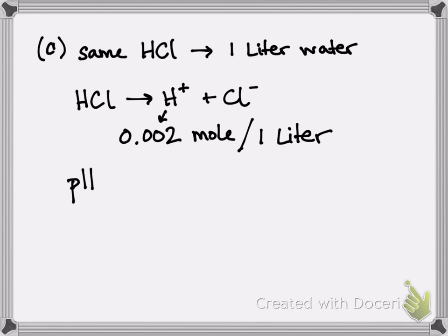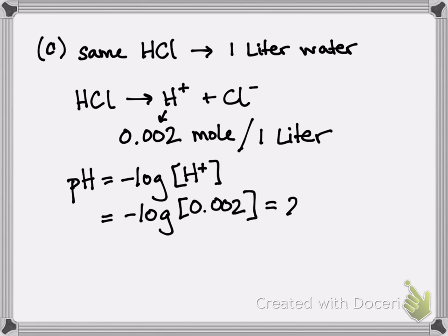And so if you want to know the pH, you could then plug it into this formula. pH equals negative log of H. Negative log of 0.0025 is 2.7. And that is your final answer.